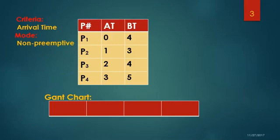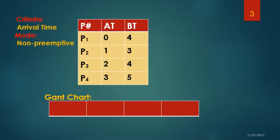This is an example of First Come First Serve scheduling algorithm. The criteria for FCFS is arrival time, which means the process which comes first will be operated first and the process which comes later will be operated later. The mode for FCFS is non-preemptive, which means once you give a job to the CPU, the CPU cannot be taken away from the process until it finishes its execution. In this example, we have four processes with their arrival times and burst times, and we have to draw the Gantt chart for each process.